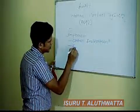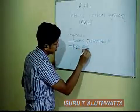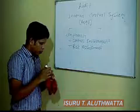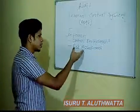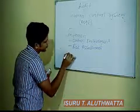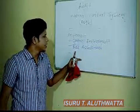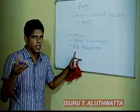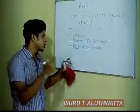The next component is risk assessment. For any given organization, they have risks, and you cannot reduce risk down to zero. When it comes to risk assessment, you can identify a lot of risks for the organization. When you identify those risks, you make sure you have control activities in place.